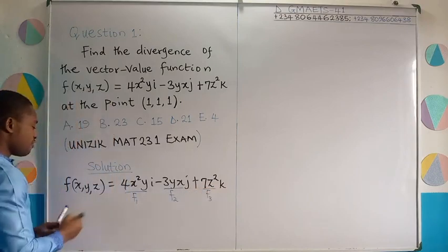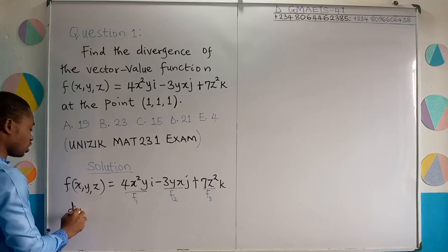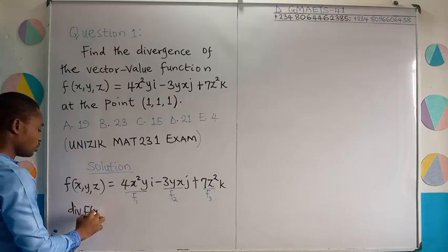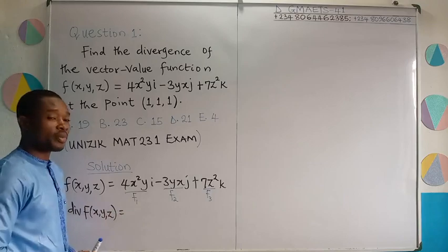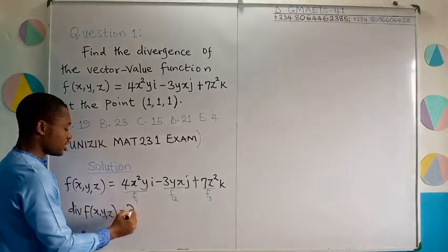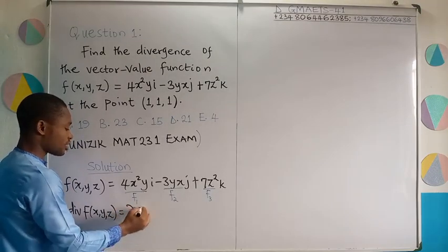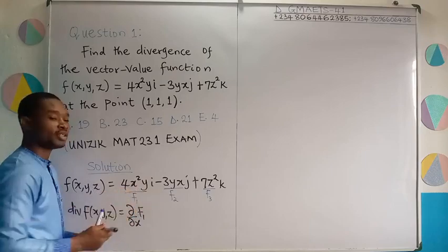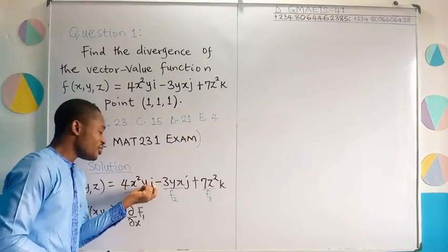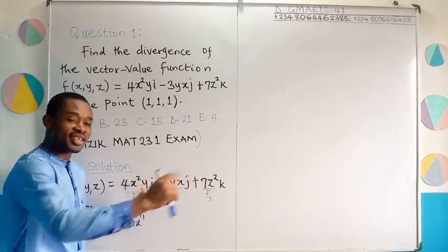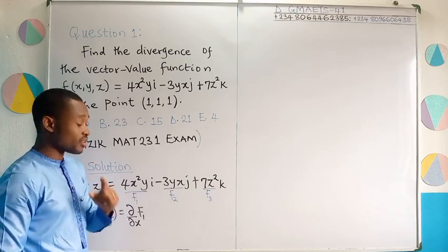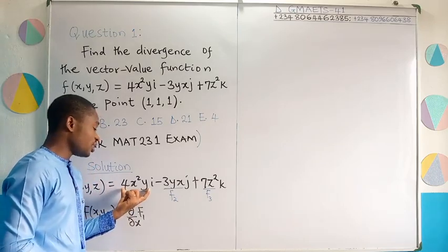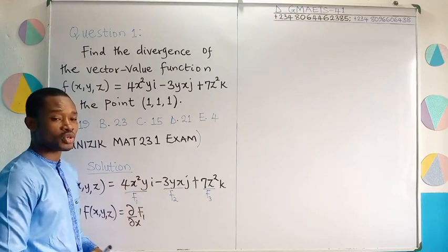And so the divergence of this vector value function will simply be given as partial derivative with respect to x of this component f1. Remember that this unit vector i defines x axis. Is that not so? And that's the reason why we are differentiating this component partial derivative with respect to x.